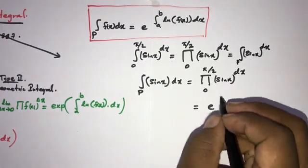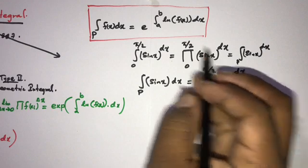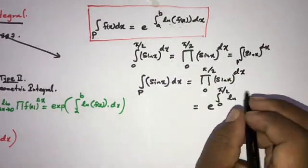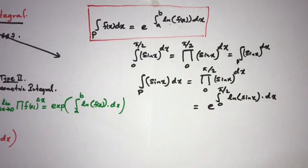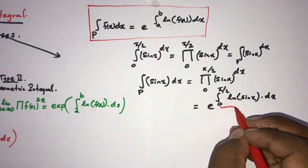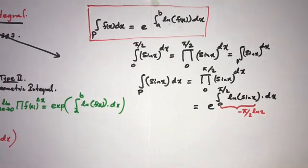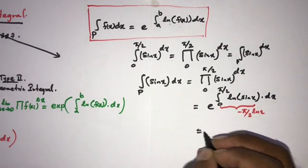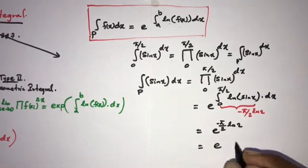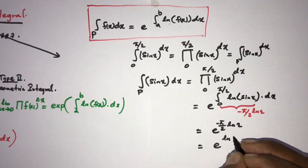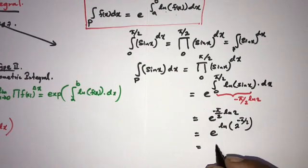This equals e to the integral from 0 to π/2 of the natural log of f(x), where f(x) = sine of x. So we have the well-known integral from 0 to π/2 of the natural log of sine of x, which equals −(π/2) ln 2. Therefore this equals e to the power of −(π/2) ln 2, which simplifies to ln(2) raised to the −π/2. Since e and natural log cancel, we get 2 raised to the −π/2.